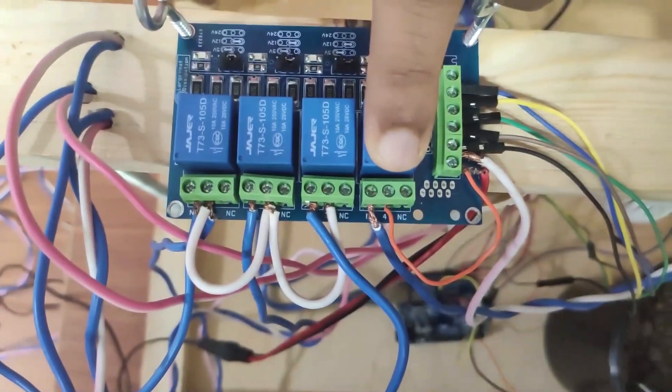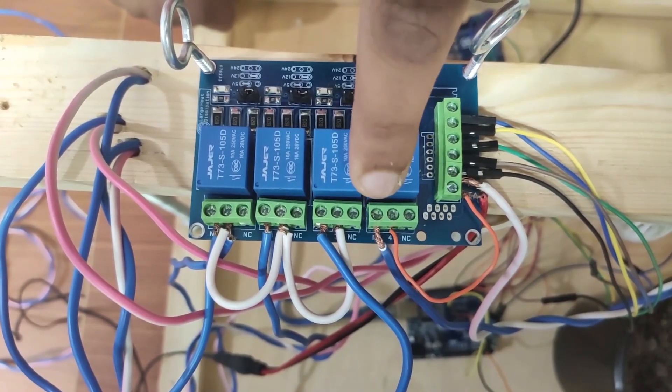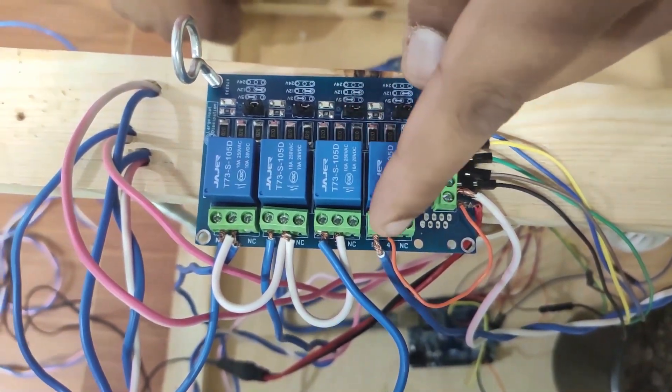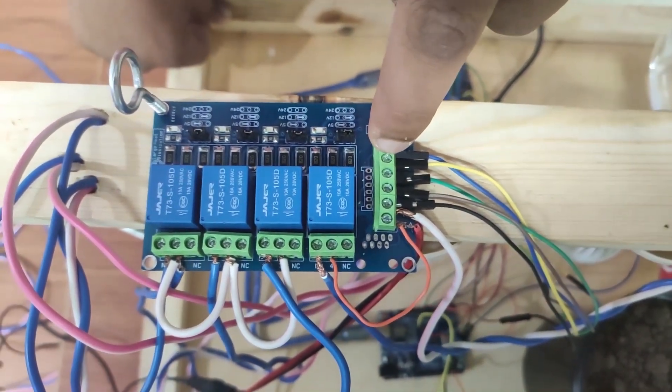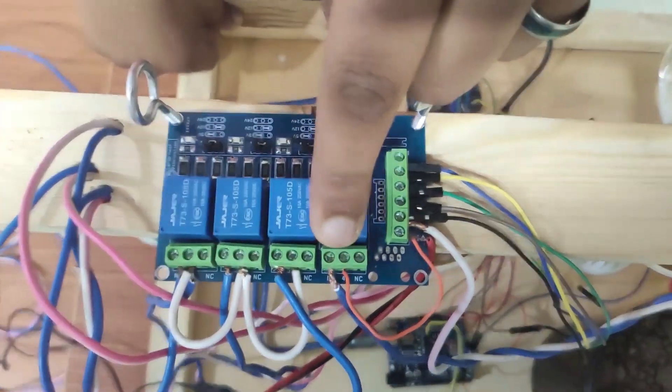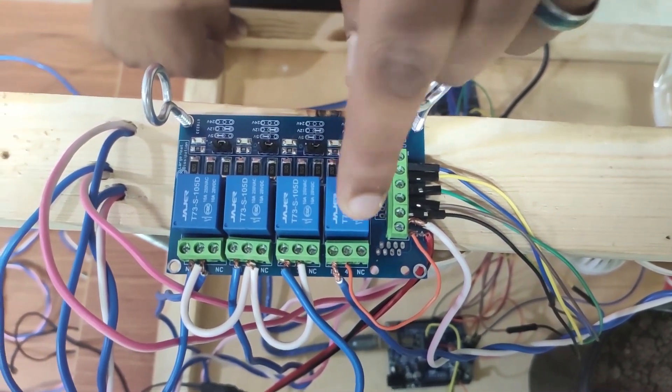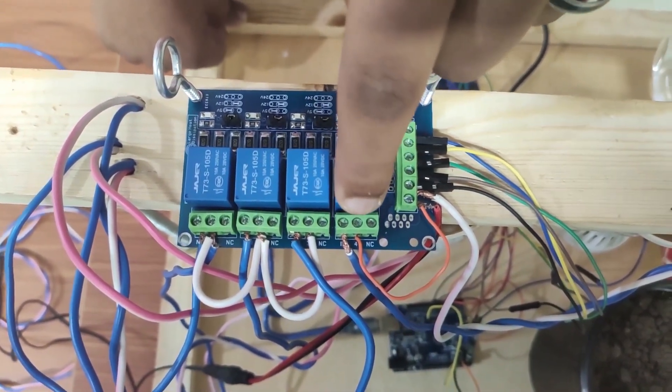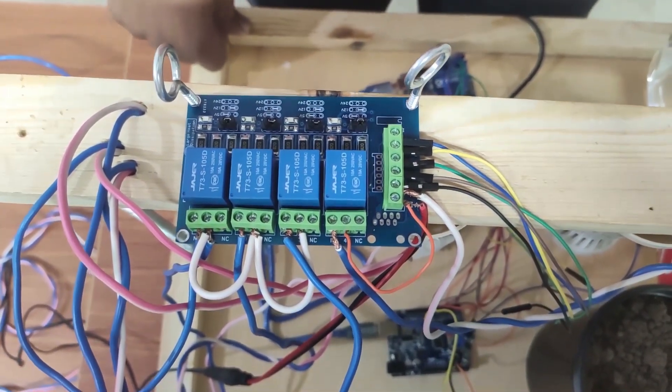In the middle pin we connect the voltage source which feeds this output, and in the left pin we connect the positive end of this output. When we have zero from the controller, the voltage source is not connected to the positive end and no current passes. If we have one, the current passes from the voltage source to the output and turns it on.